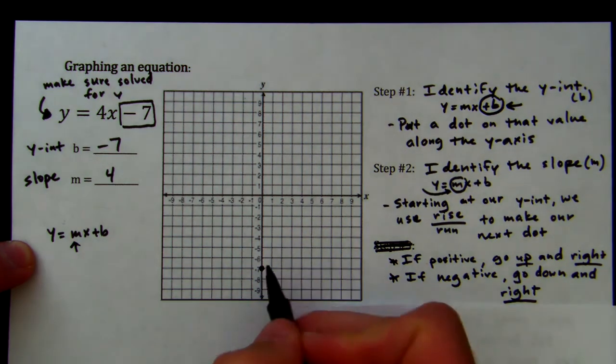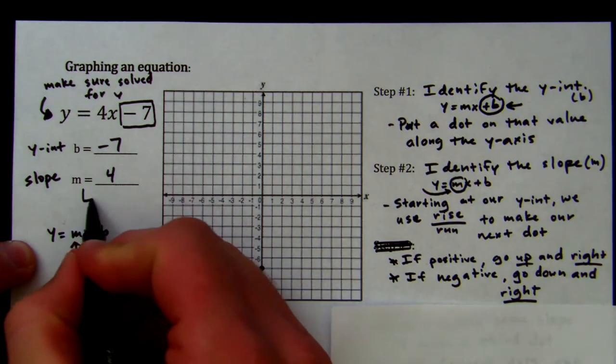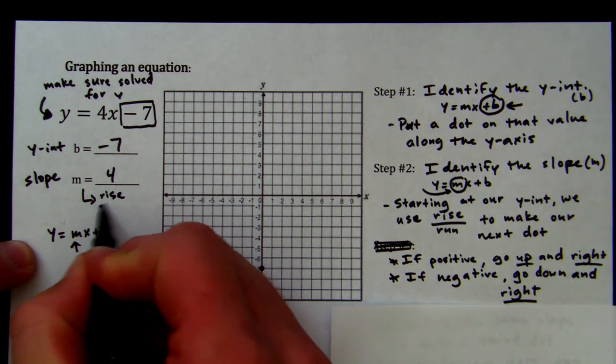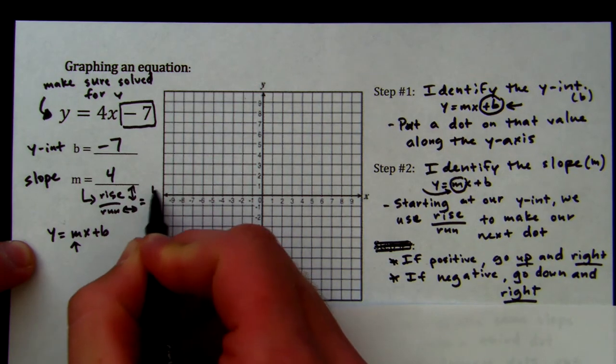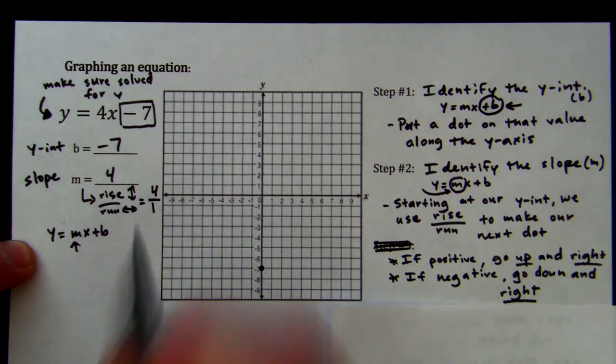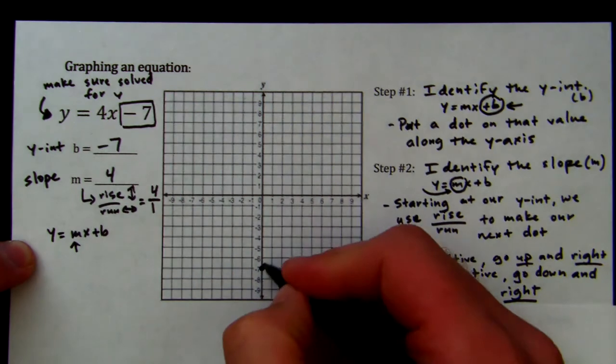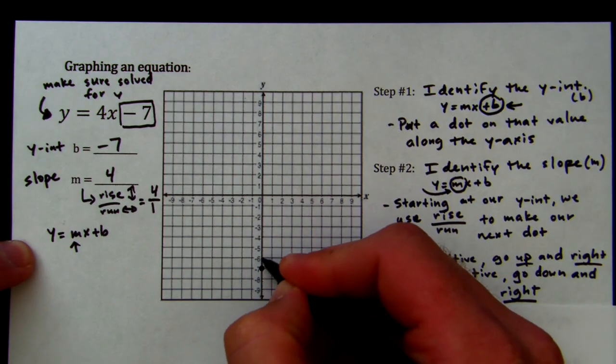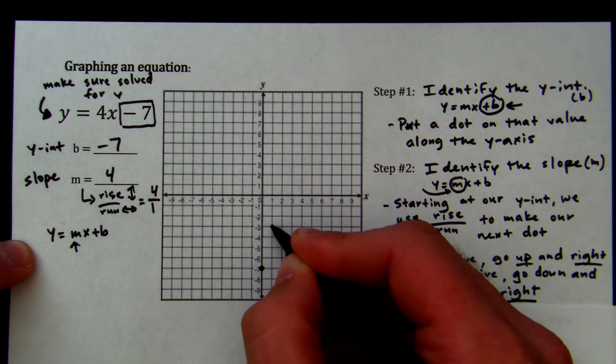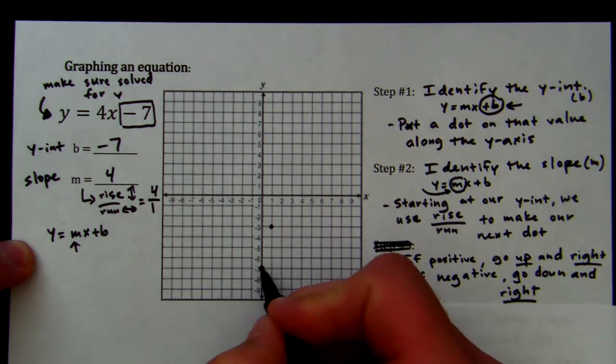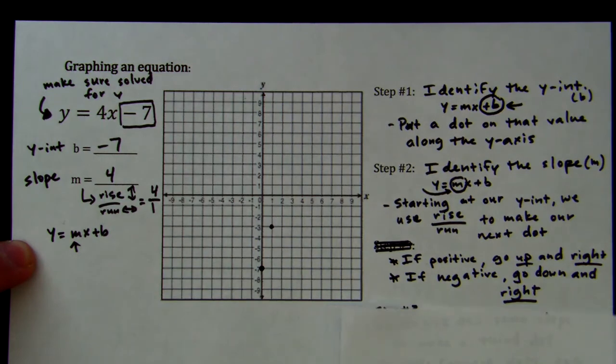In this case, we have a positive slope. We're going to start at our y-intercept. My rise over run, remember rise is this way, run is left and right, is 4, and we can turn this into a fraction, 4 over 1. So, I'm going to go up 4, and I'm going to count carefully here, 1, 2, 3, 4 over 1, just like this. So, I started here, up 4 over 1.